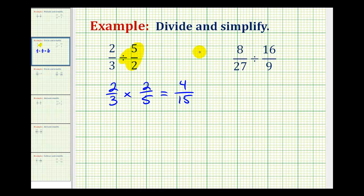Let's take a look at a second example. Again, the first step is going to be to rewrite this as a multiplication problem. Dividing by sixteen-ninths is equivalent to multiplying by nine-sixteenths. So we'll have eight-twenty-sevenths times nine-sixteenths.